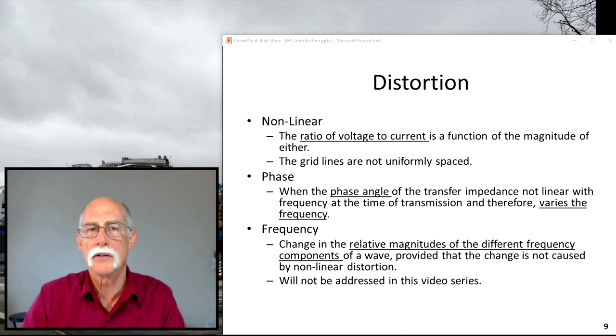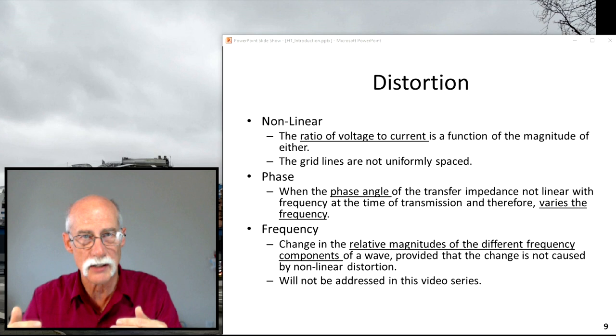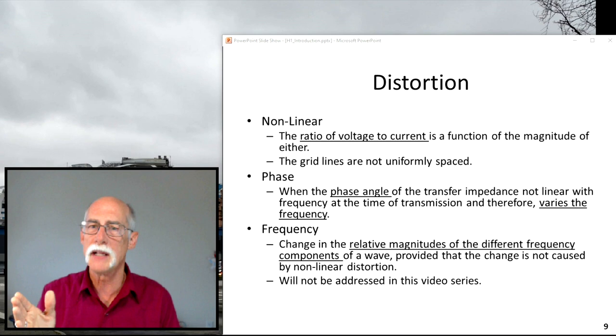Also the amplitude. So there's nonlinear distortion. The ratio of the voltage and current is a function of the magnitude of either. So if you're changing the current or you're changing the voltage by something that's significant, you're going to create distortion on the fundamental wave.